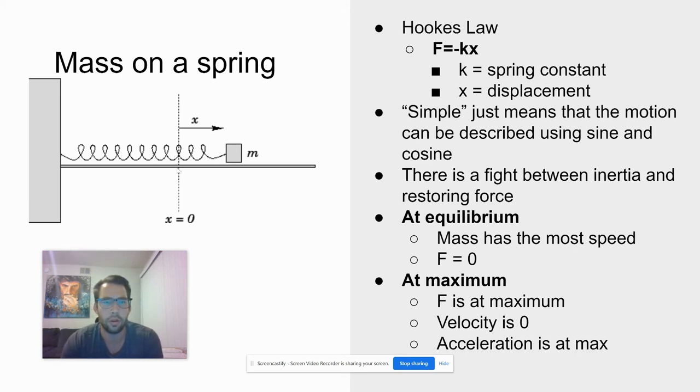So at equilibrium, we're going to have the mass have the most speed at that time. Our restoring force at equilibrium is actually going to be zero. And our maximum force or restoring force is going to be at our maximum displacement. And our velocity at this point is going to be zero. And our acceleration is going to be at its maximum.